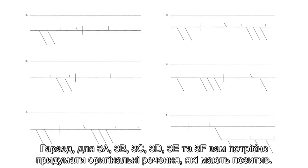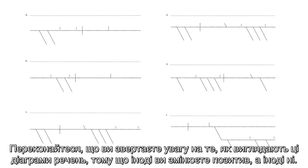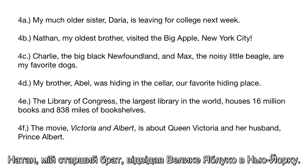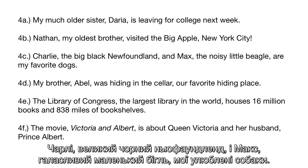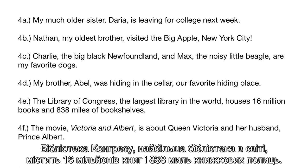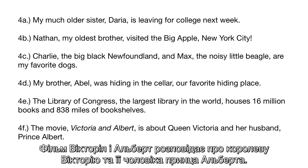For 3A, 3B, 3C, 3D, 3E, and 3F, you need to come up with original sentences that have appositives. Make sure you are paying attention to how these sentence diagrams look, because sometimes you're modifying the appositive and other times you are not. For number 4, we have several sentences: 'My much older sister Daria is leaving for college next week.' 'Nathan, my oldest brother, visited the Big Apple, New York City.' 'Charlie, the big black Newfoundland, and Max, the noisy little beagle, are my favorite dogs.' 'My brother, Abel, was hiding in the cellar, our favorite hiding place.' 'The Library of Congress, the largest library in the world, houses 16 million books and 838 miles of bookshelves.' 'The movie Victoria and Albert is about Queen Victoria and her husband, Prince Albert.'